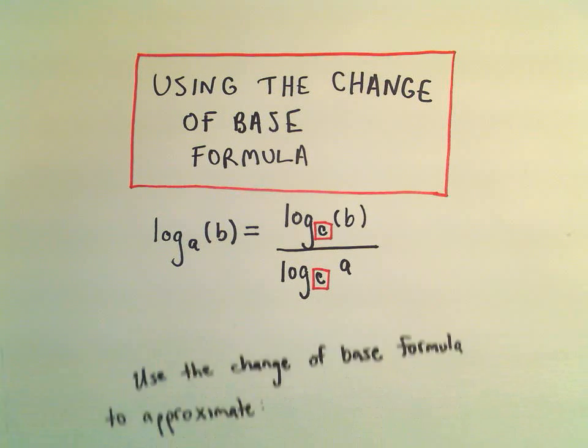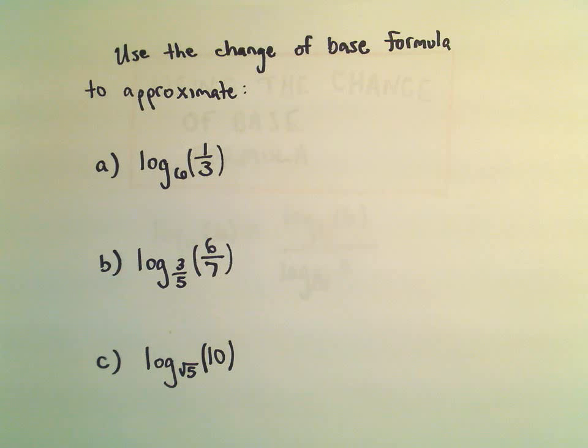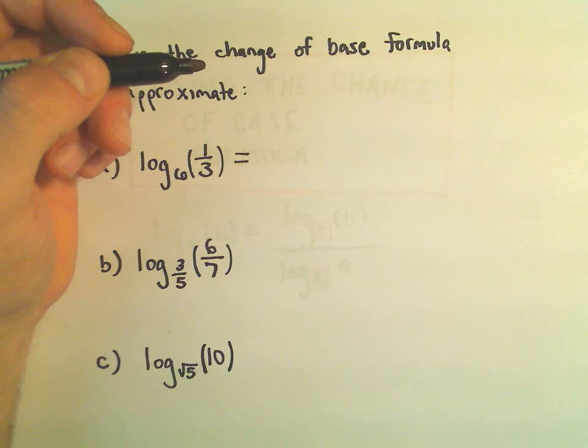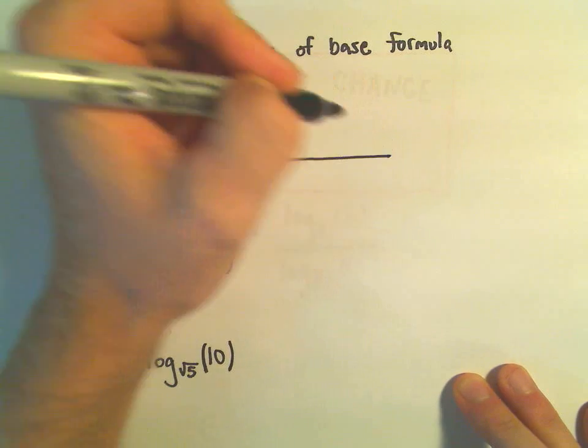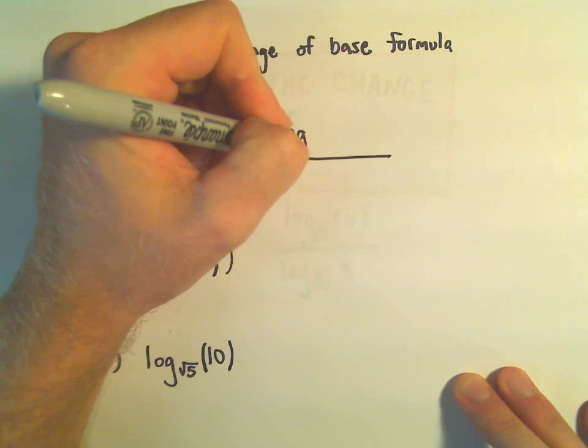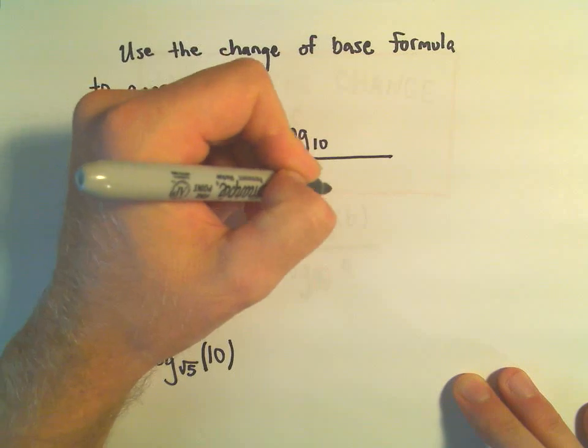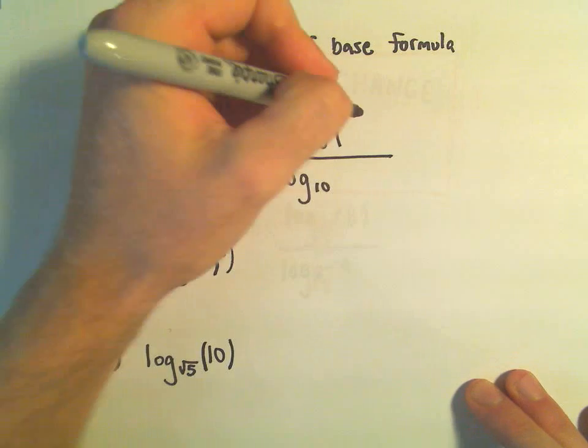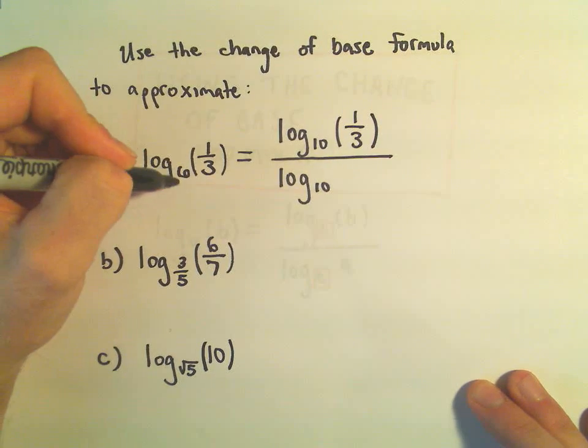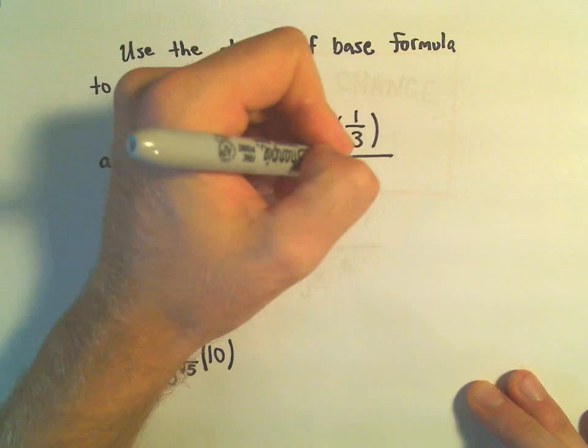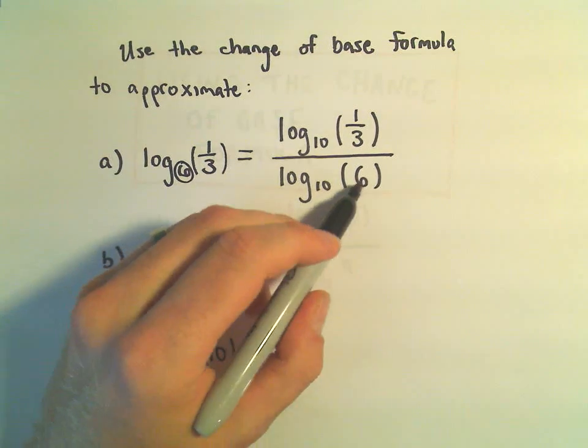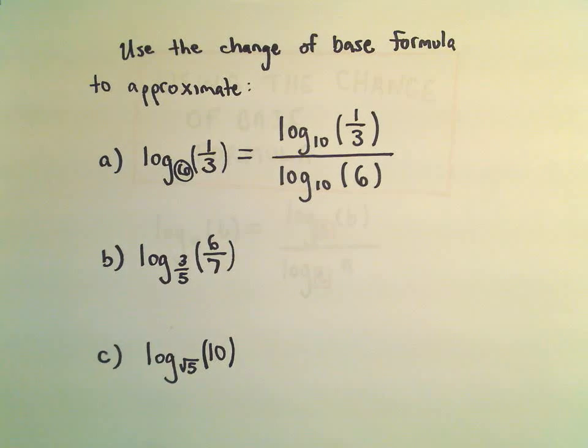For example, we've got log base 6 of 1/3. I'm going to turn everything into log base 10, the common logarithm, since that's one my calculator can do. Whatever number is inside the parentheses, that's what goes in the numerator. And whatever the base was, that goes in the denominator. I kind of remember, since it's the base, it goes in the basement, the bottom part. That was always kind of how I remembered.